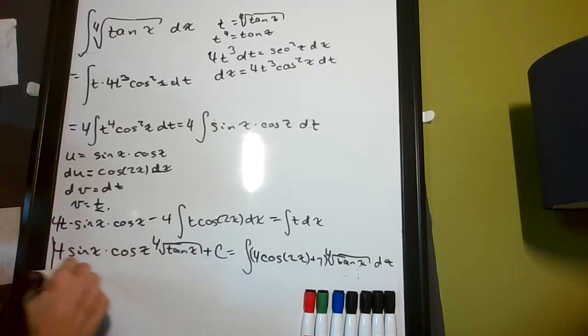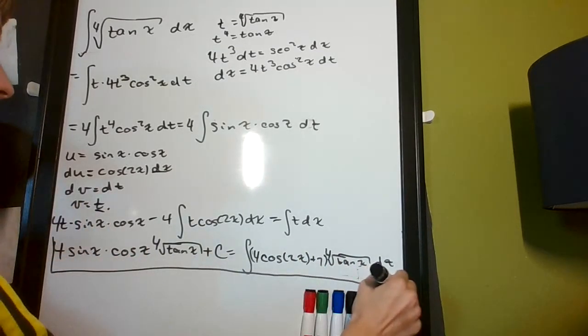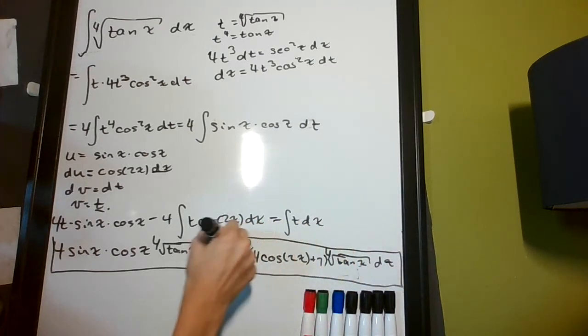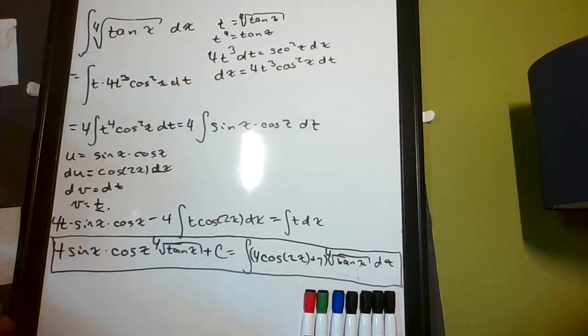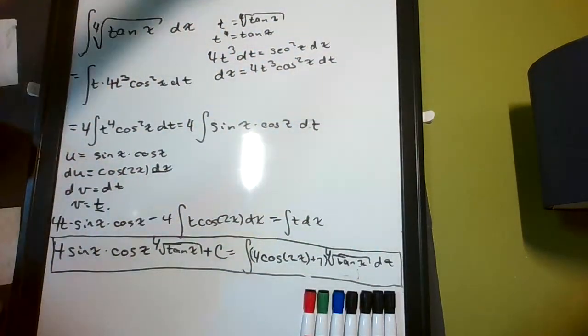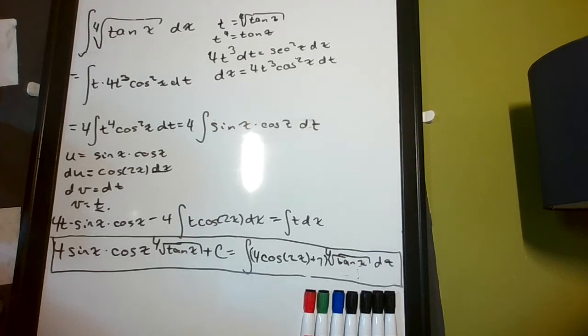And, there we go. Isn't that amazing? How we got this out of that by algebraically manipulating that. Isn't that wonderful? Thank you.